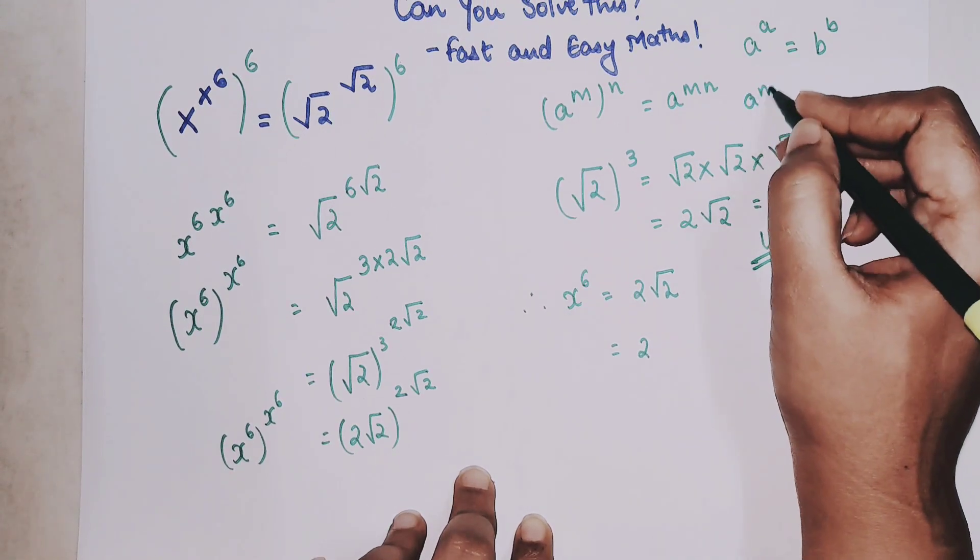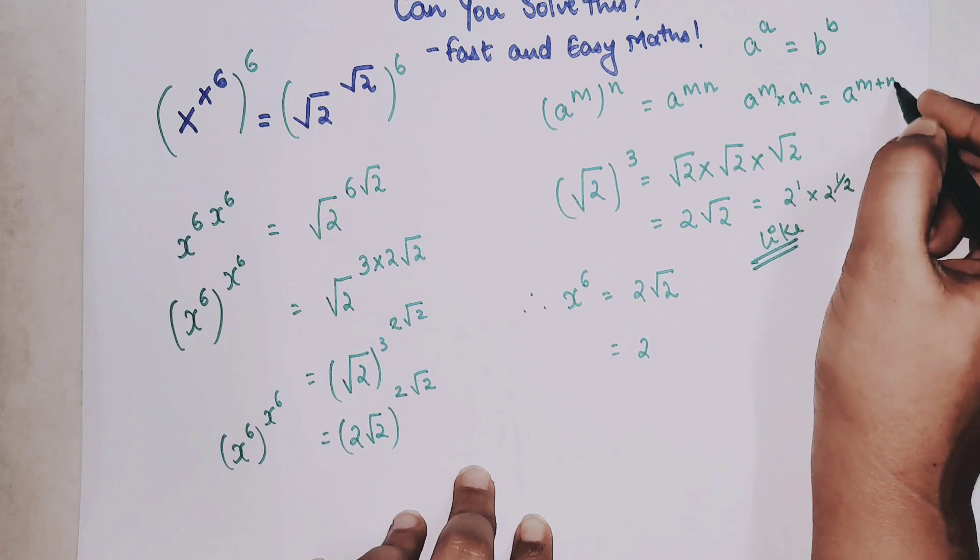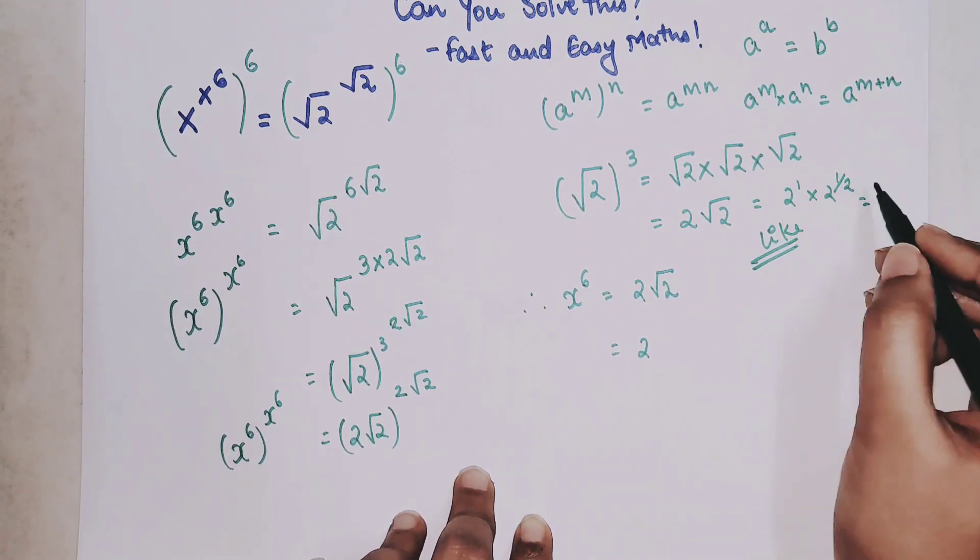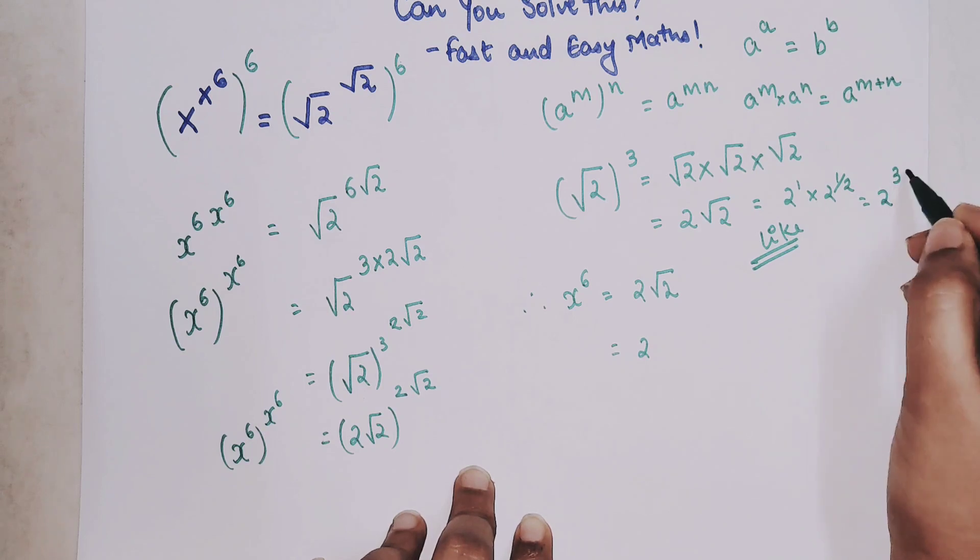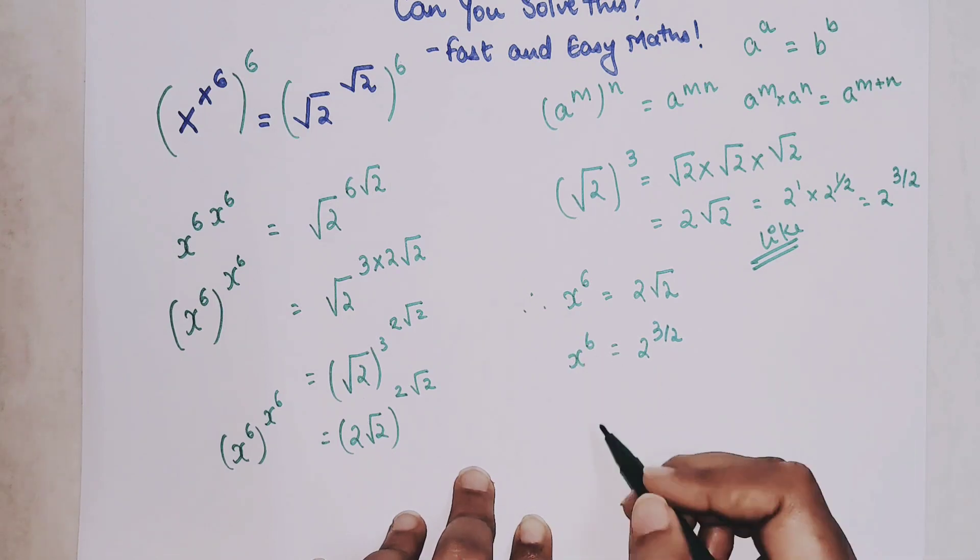And we know that a raised to m into a raised to n is equal to a raised to m plus n. So I just have to add these indices. So 1 plus half will be 2 raise to 3 by 2.